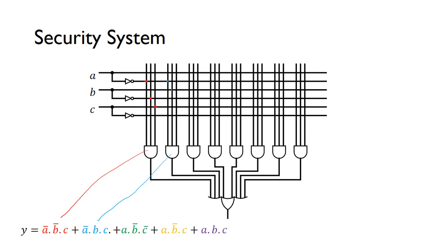For the next minterm we've got A and NOT B and NOT C. So A needs a connector here, NOT B here, and NOT C here. This AND gate output will represent this minterm.